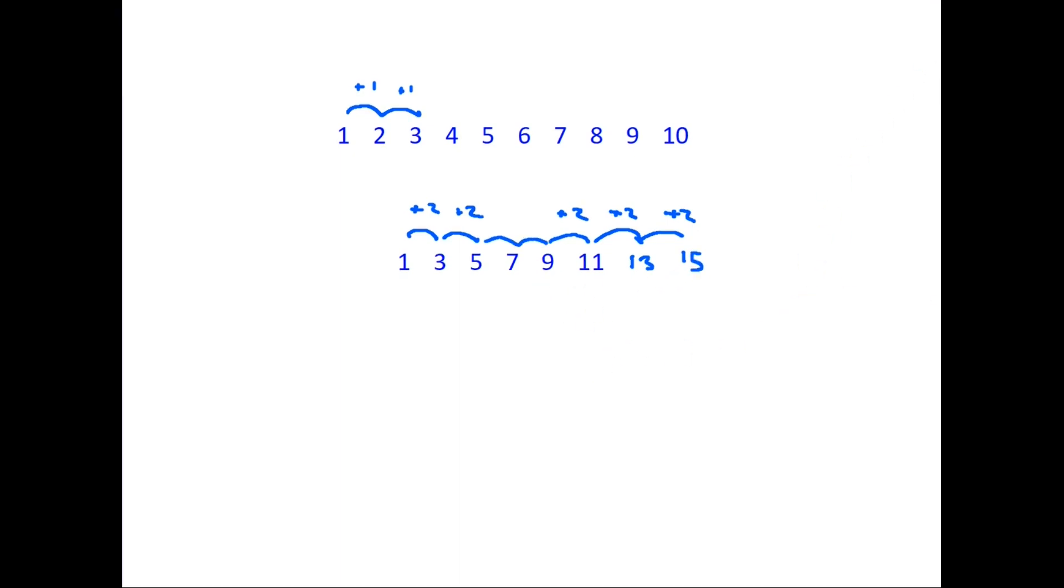So in order to find these numbers what we've actually done is looked for the rule for this particular pattern. And in this case as we've said each one is going up by two. So the rule for this pattern is plus two. We have to add two every time we want to find the next number.